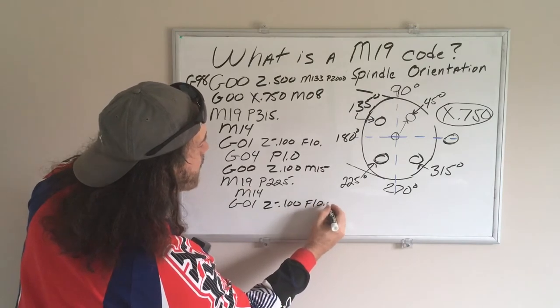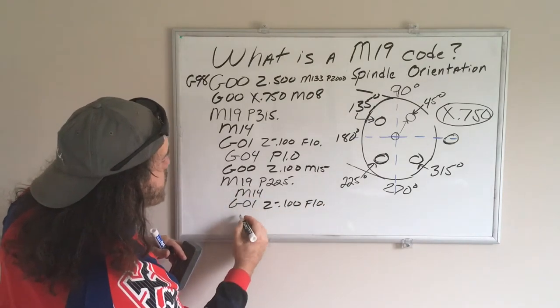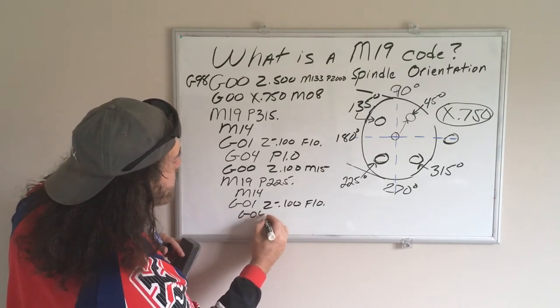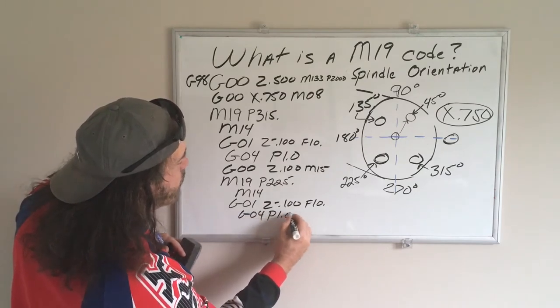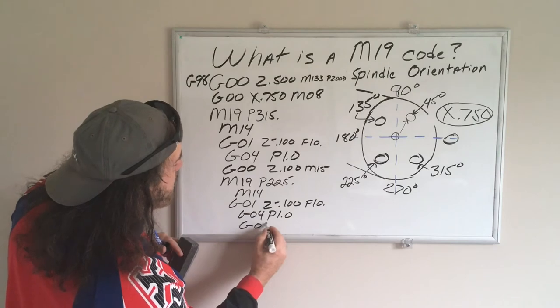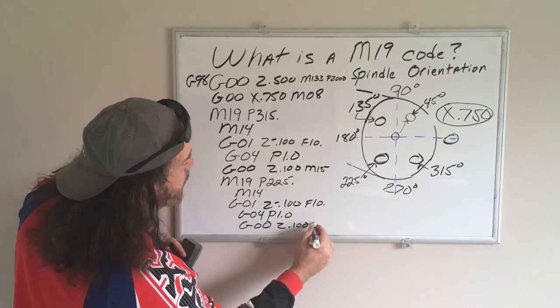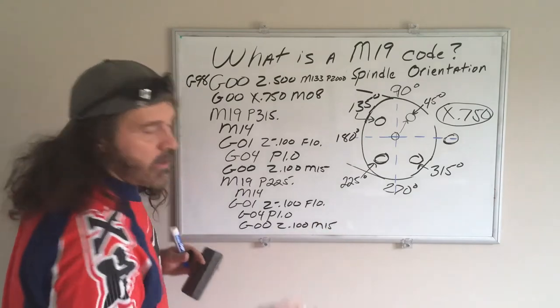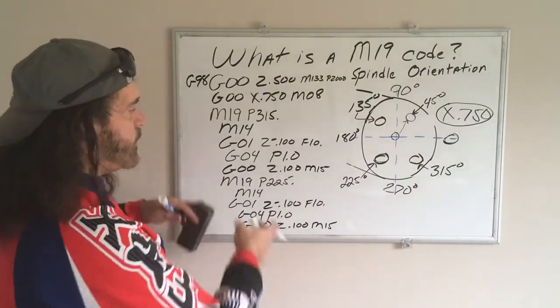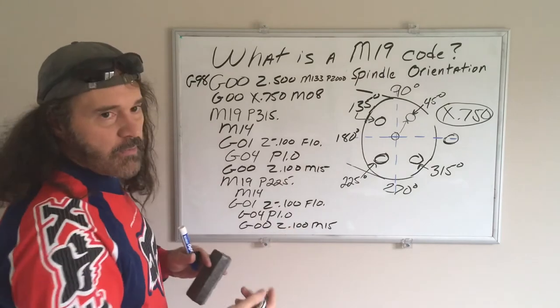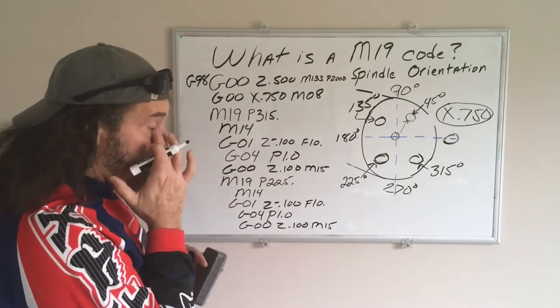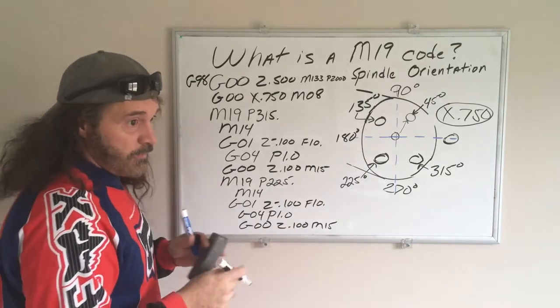G01 Z-0.100, feed rate of 10, and we'll do the dwell, G04 P1, and then rapid back out Z0.100, M15. And then so on and so forth.